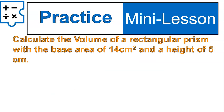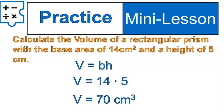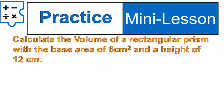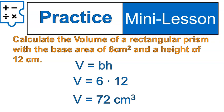Let's practice. Calculate the volume of a rectangular prism with a base area of 14 square centimeters and a height of 5 centimeters. Using Volume equals area of the base times the height, we take 14 times 5 to get our volume. Next: calculate the volume of a rectangular prism with a base area of 6 square centimeters and a height of 12 centimeters. Did you do 6 times 12? That gives you 72 cubic centimeters. Straightforward math — just multiply the numbers.